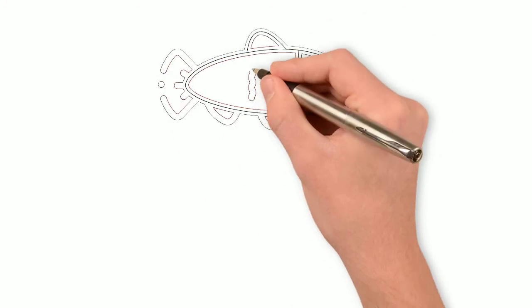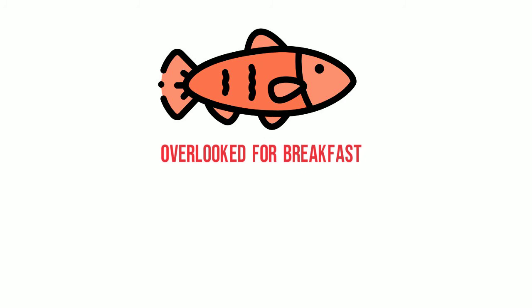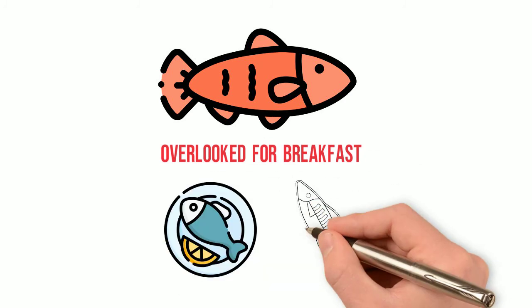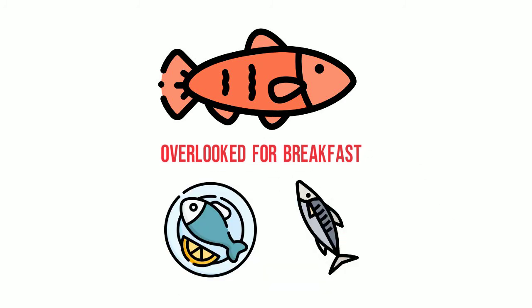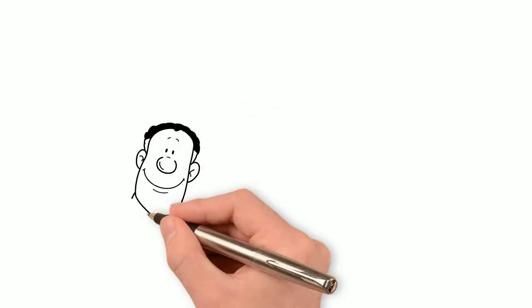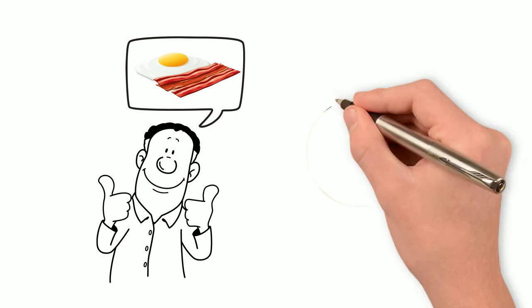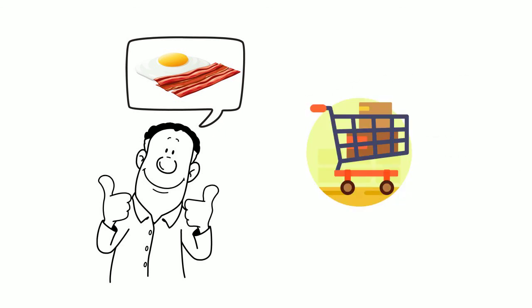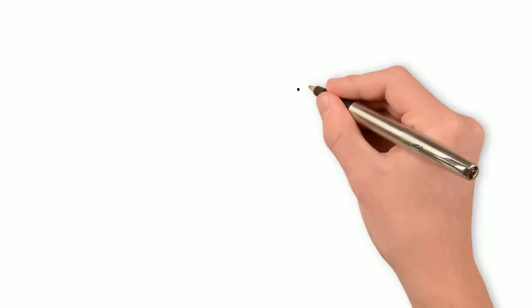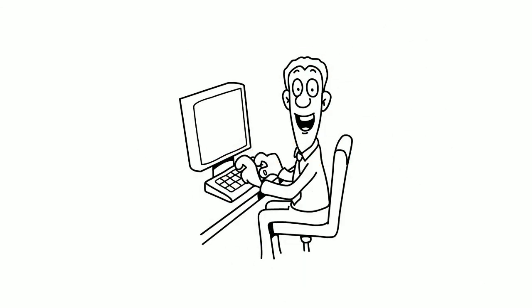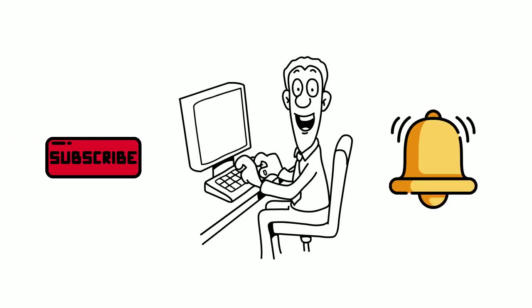Fish is another food that's often overlooked for breakfast. Kippers or smoked mackerel are a couple of good examples that I use. The aim of these breakfast choices is just to get you thinking outside of the box, so you're able to purchase the ingredients in advance and experiment on your own. Hopefully these ideas have helped. Please remember to subscribe and hit the notification bell. Thank you.